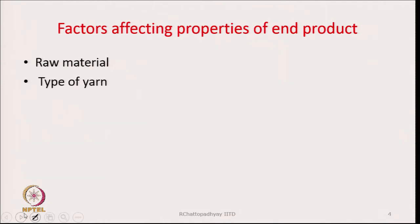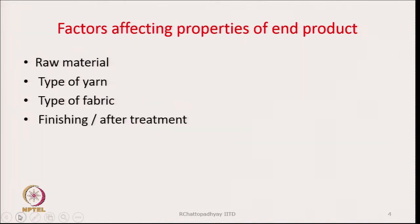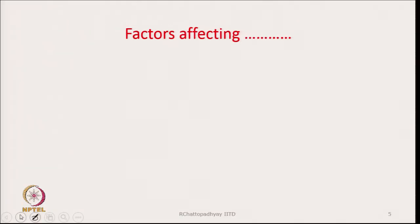Factors affecting the property of the end product are: first, raw material — whether it is cotton, polyester, or nylon; then the type of yarn being used. You have already been told about the various types of yarns available commercially. Then comes the type of fabric, finishing and after-treatments, and finally the makeup — when we convert the fabric into a particular product. So many factors are there which affect the property.